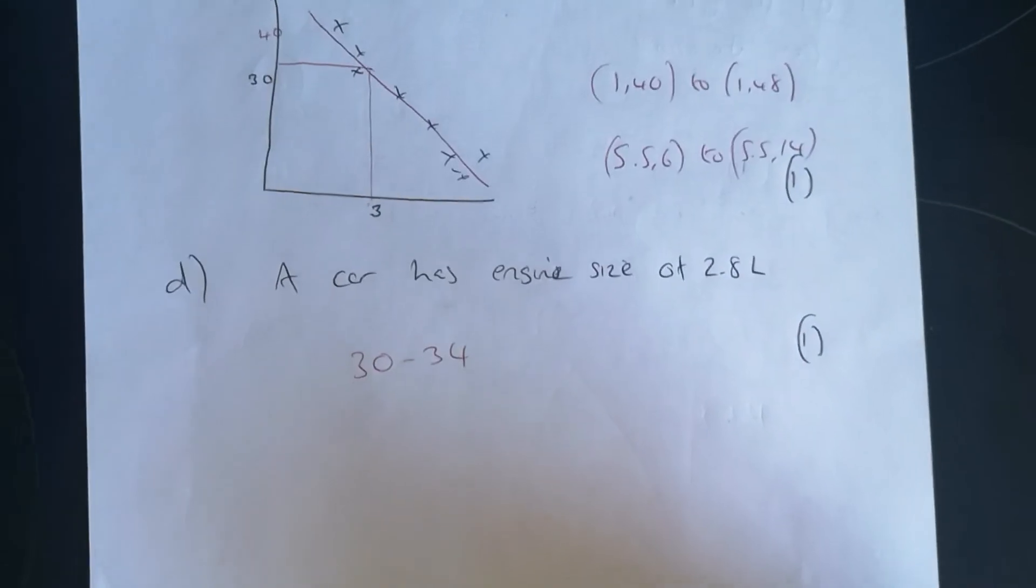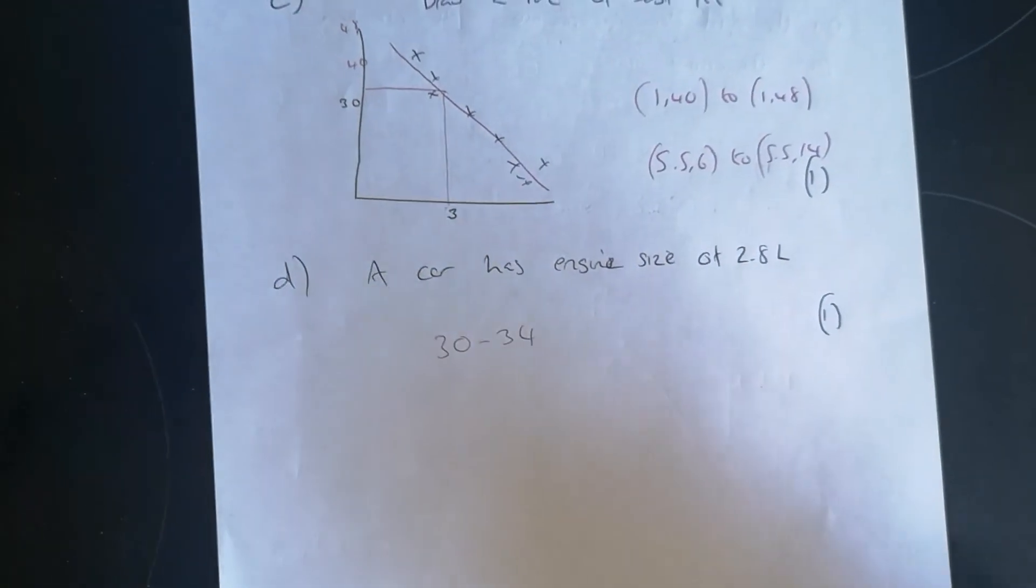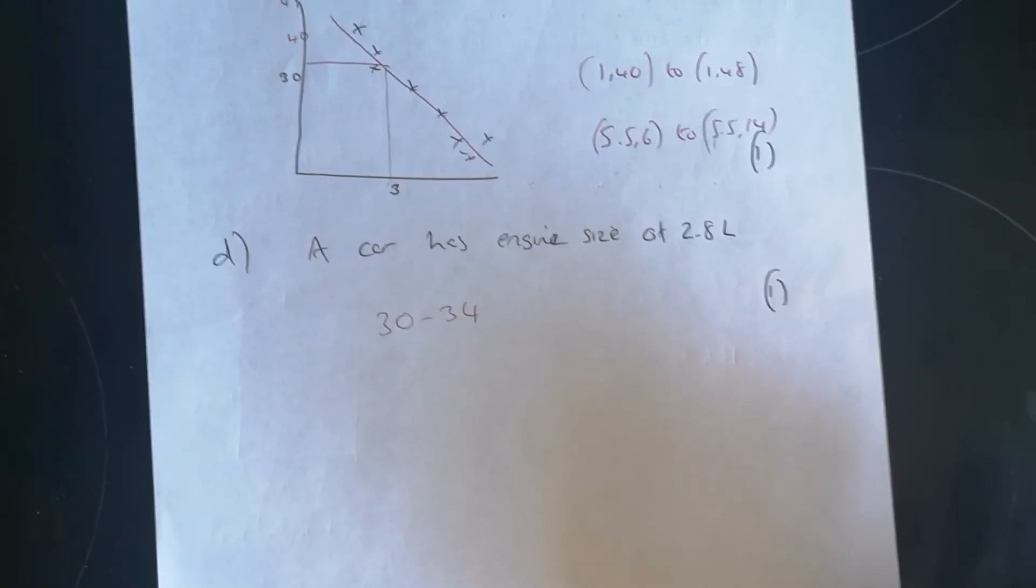Okay, so anything between 30 and 34, 30 counts and 34 counts. Again, not straightforward. All right.